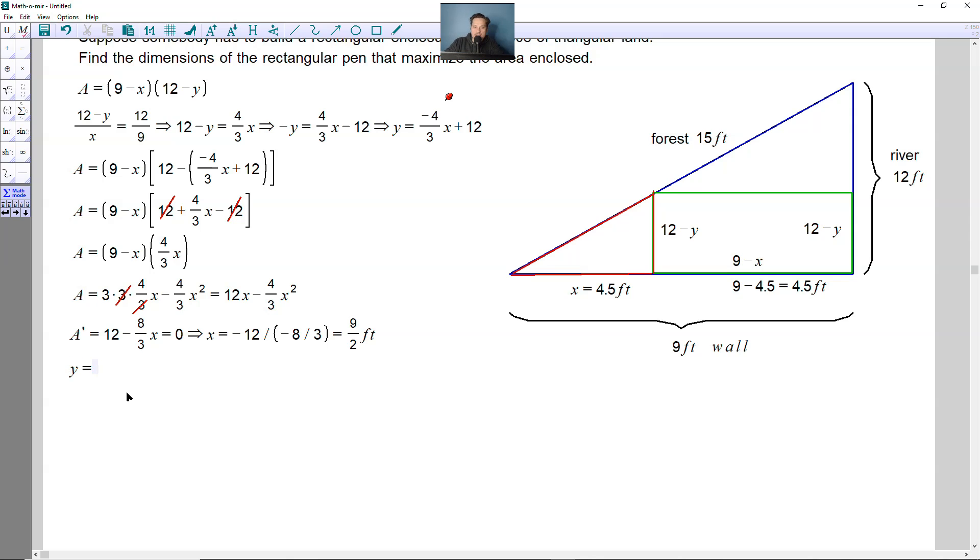So we're going to proceed as follows. Remember y was equal to negative 4 thirds times x. Now x is known to be 9 halves, so times 9 over 2, and then you're going to add 12. Simplify this. Well, you have negative 4 divided by 2, that's going to give you negative 2. You have 9 divided by 3, that's going to give you positive 3, plus the 12. So it's going to give you negative 6 plus 12, which is then positive 6 feet. So you know the value of y right here. Which means that the vertical dimension here would be 12 minus 6, which is equal to 6 feet.